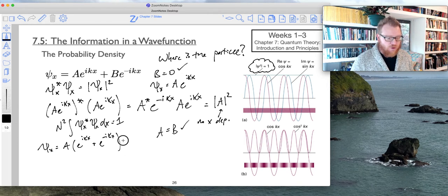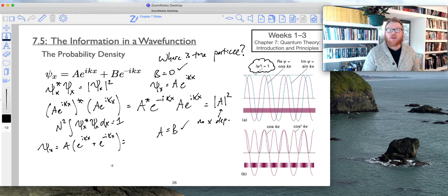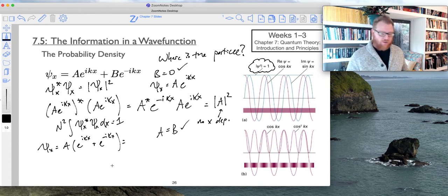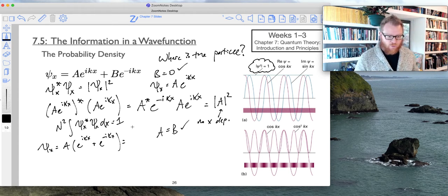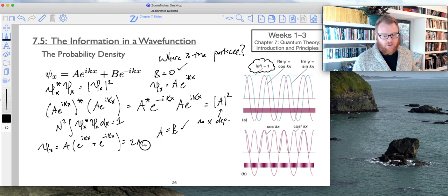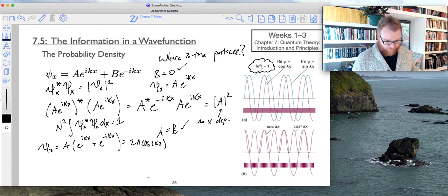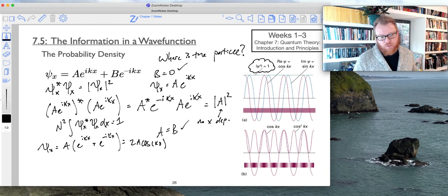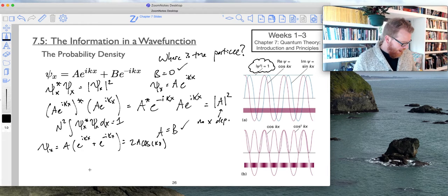And so I'll also note that, and I'm not going to go through this in great detail, but through Euler, this would actually all be equal to 2A times the cosine of Kx.